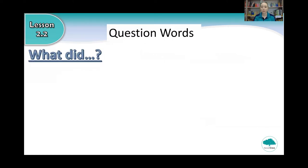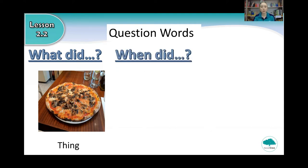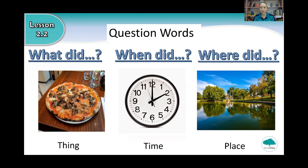And do you remember the question words? You can say what did when we talk about a thing — for example, a pizza. And when did? When do we use when did? That's right, when we talk about time. And when do we use where did? Very good, where did for a place.